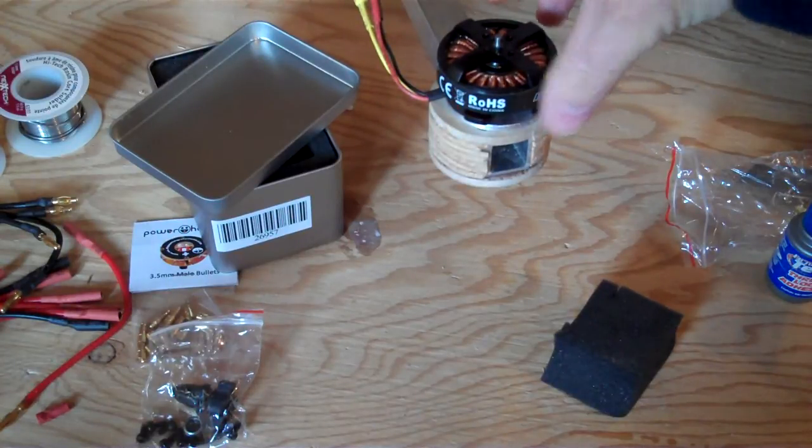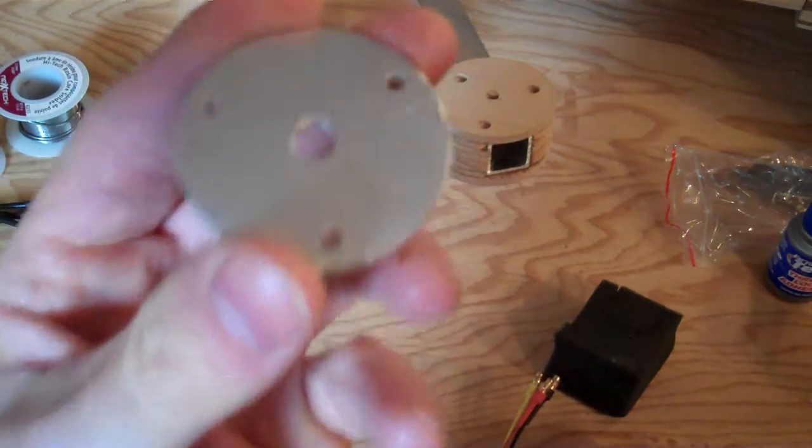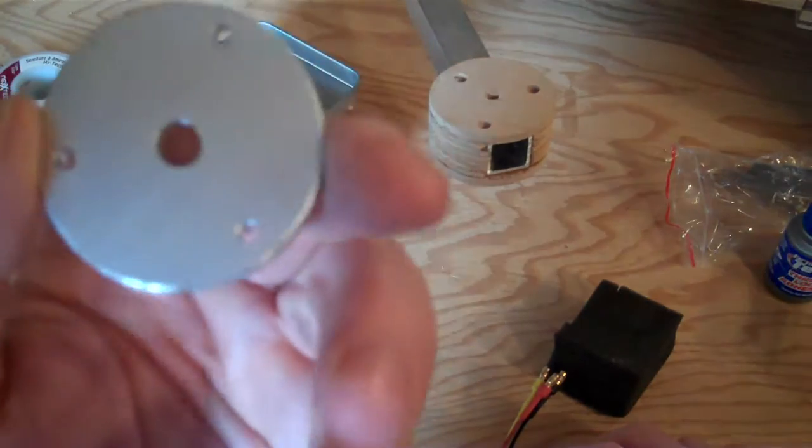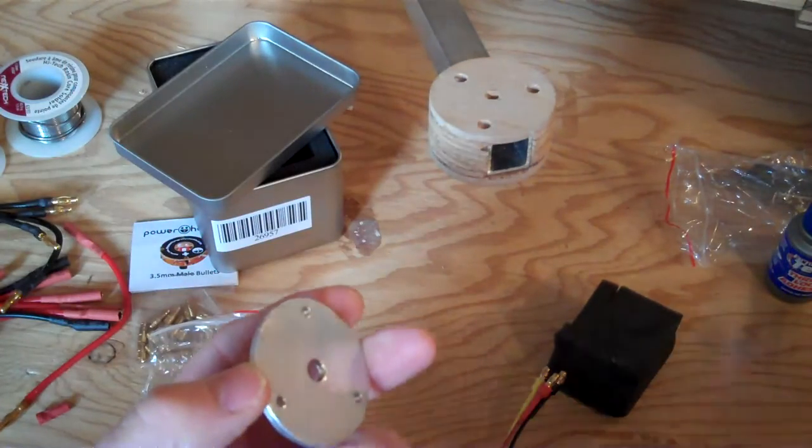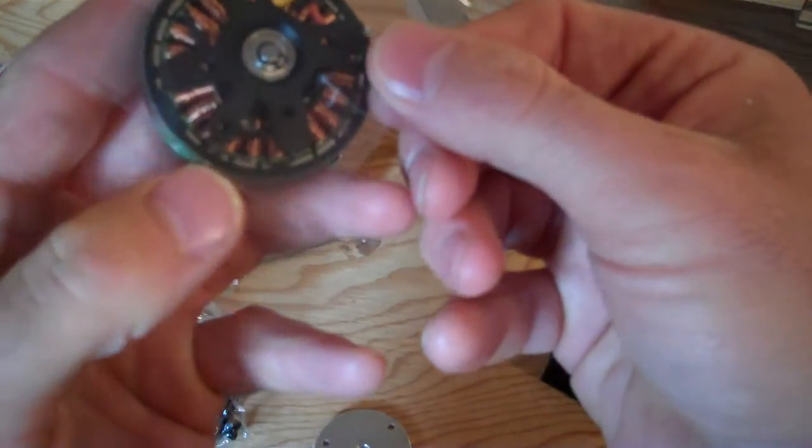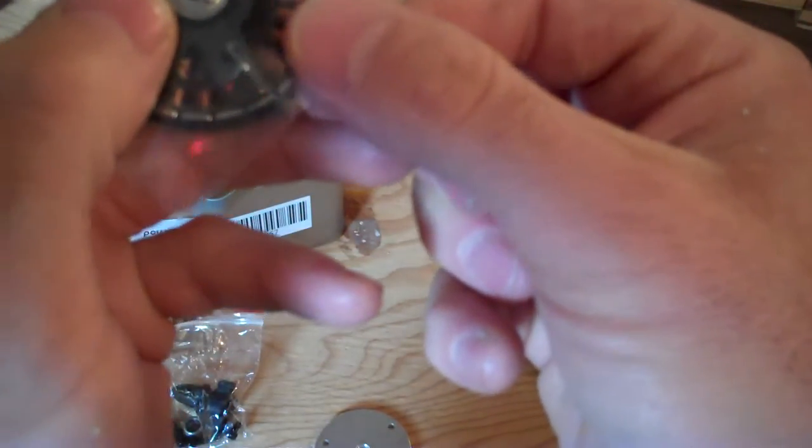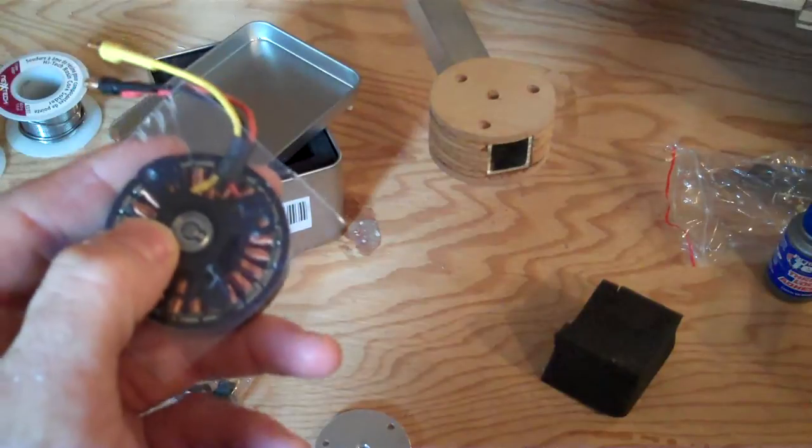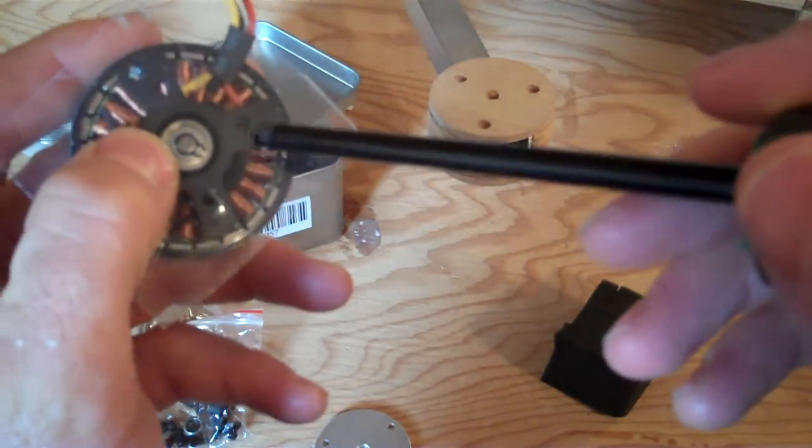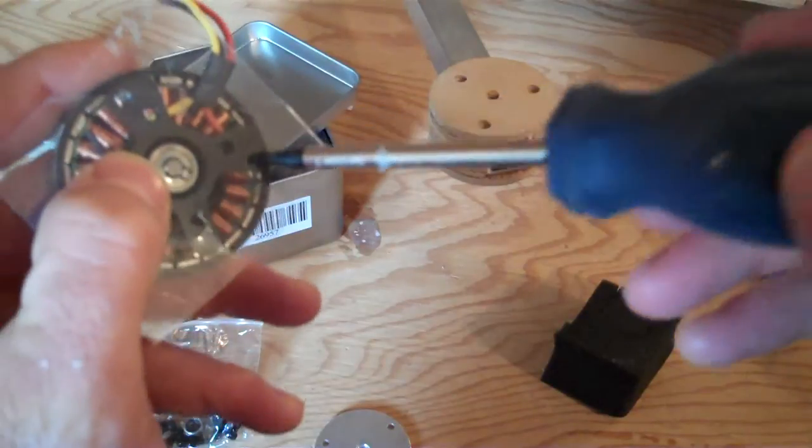I'll show you how I got these holes laid out nice and clean. Take a hard piece of plastic and put it on the back side of the motor. Take a sharp point and, for the holes you want to use, press it into the plastic.